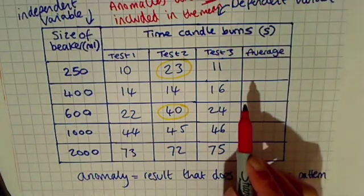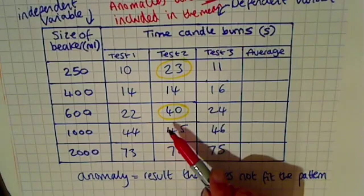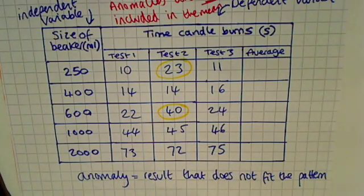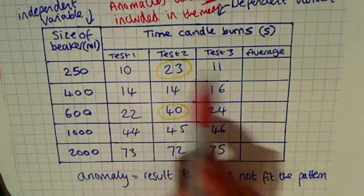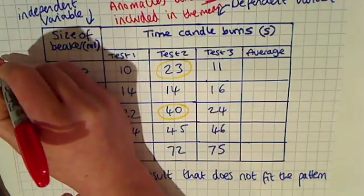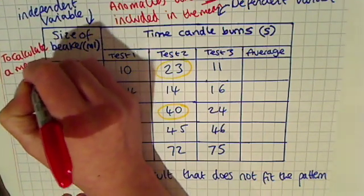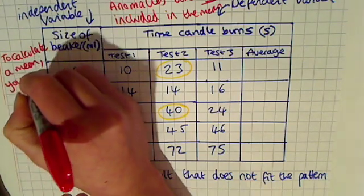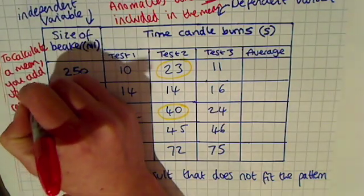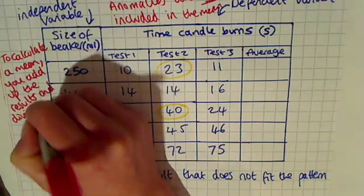What that means is we cannot include the number 23 or the number 40 when we calculate our means for our three results. To calculate a mean, you add up your results and then divide them by how many results there are.